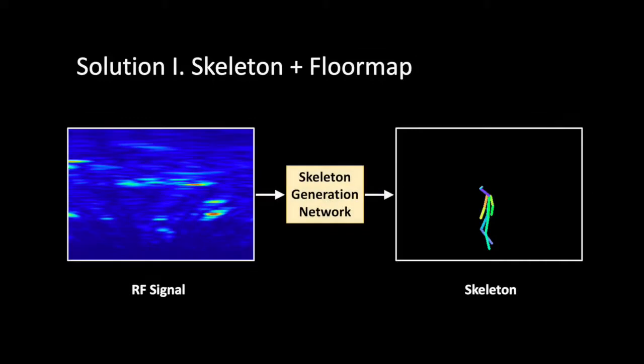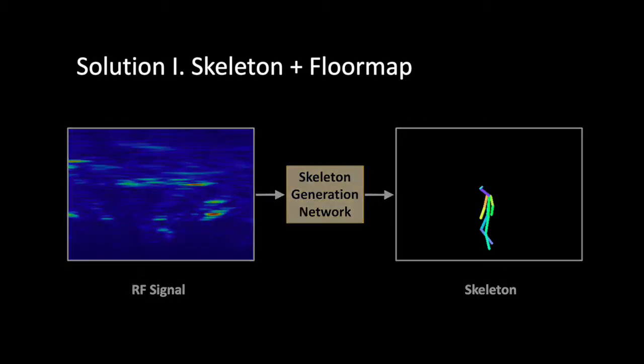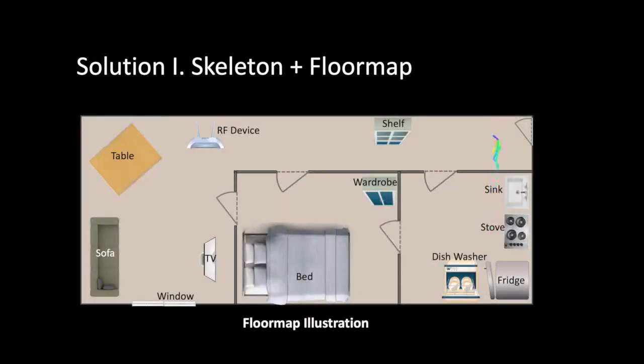Here's our solution. First, we are going to extract from RF signal the skeleton of the person. We know from past works that it is possible. The skeleton of the person will provide us information about the activities grandma is doing. To compensate for the lack of objects, our idea is to add a second modality. This modality is the layout of the home with the big appliances.